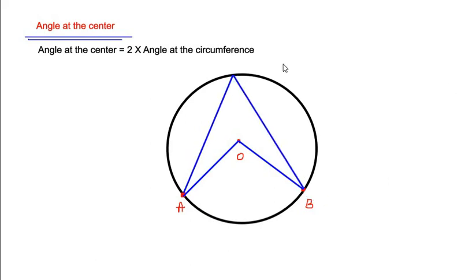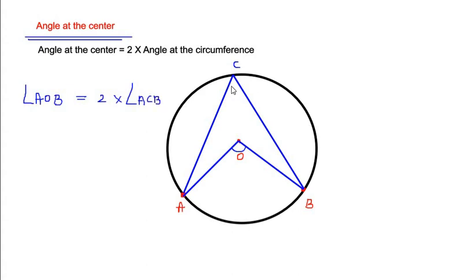Let us consider the circumference point to be C. According to the theorem, angle AOB at the center is equal to two times angle ACB at the circumference. So if we have an angle of 40 degrees at the circumference, then the angle at the center is exactly two times that, which is 80 degrees. Now let us see how we can use this theorem in solving the given example.